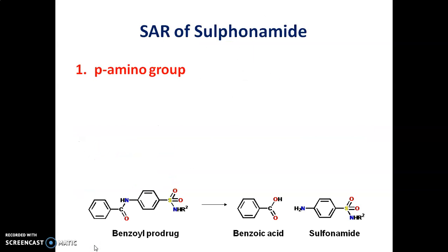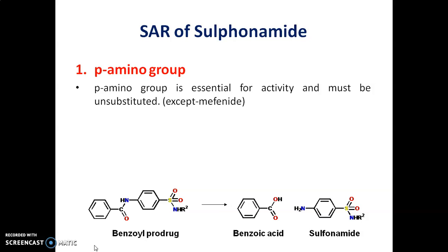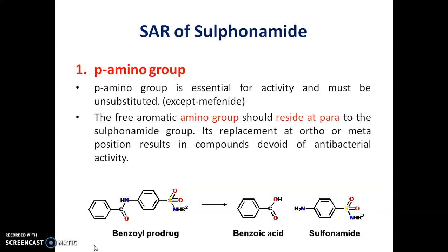The first point in the SAR of Sulphonamide is the Para-amino group. The Para-amino group is essential for the activity and it must be unsubstituted, except in the case of Mephenide. The free aromatic amino group should reside at Para position to the Sulphonamide group; if it is replaced at Ortho or Meta position it results in compounds which are devoid of antibacterial activity. The N4 amino group could be modified to Prodrugs — for example, a Benzoyl Prodrug — which can be converted to Benzoic acid and Sulphonamido group in vivo.